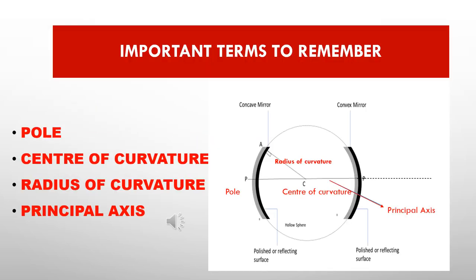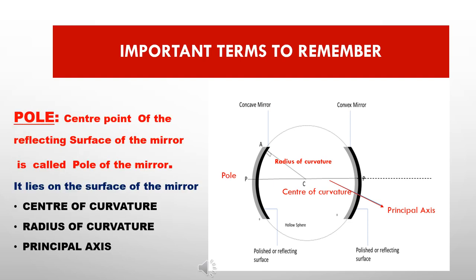Some important terms of spherical mirrors: the first is Pole. The center point of the reflecting surface of the mirror is called the Pole of the mirror. It is shown as the letter P in the diagram. It lies on the surface of the mirror — the center point of the mirror is called the Pole.